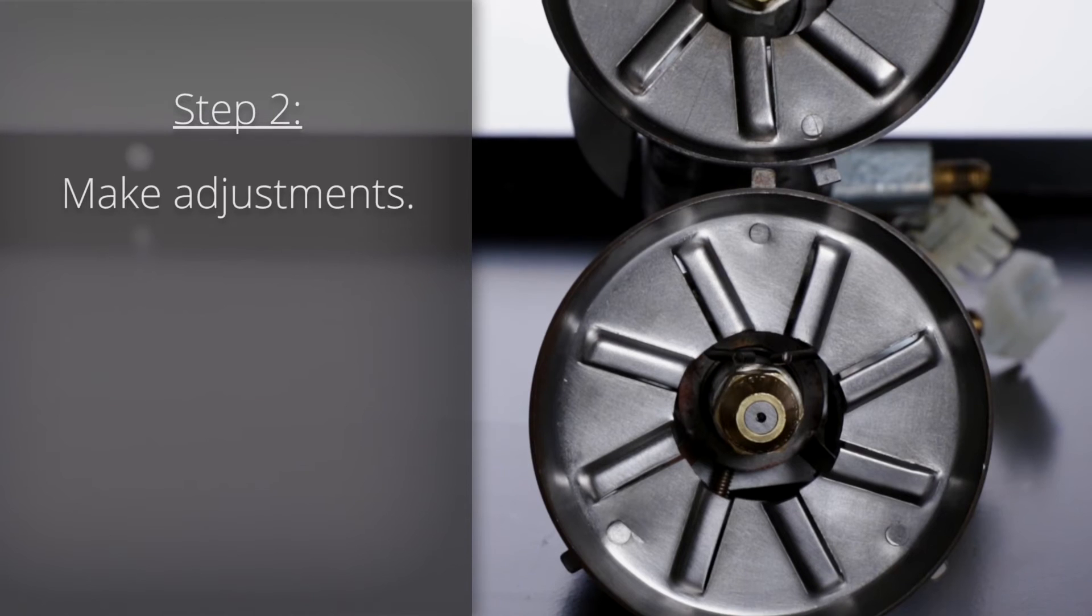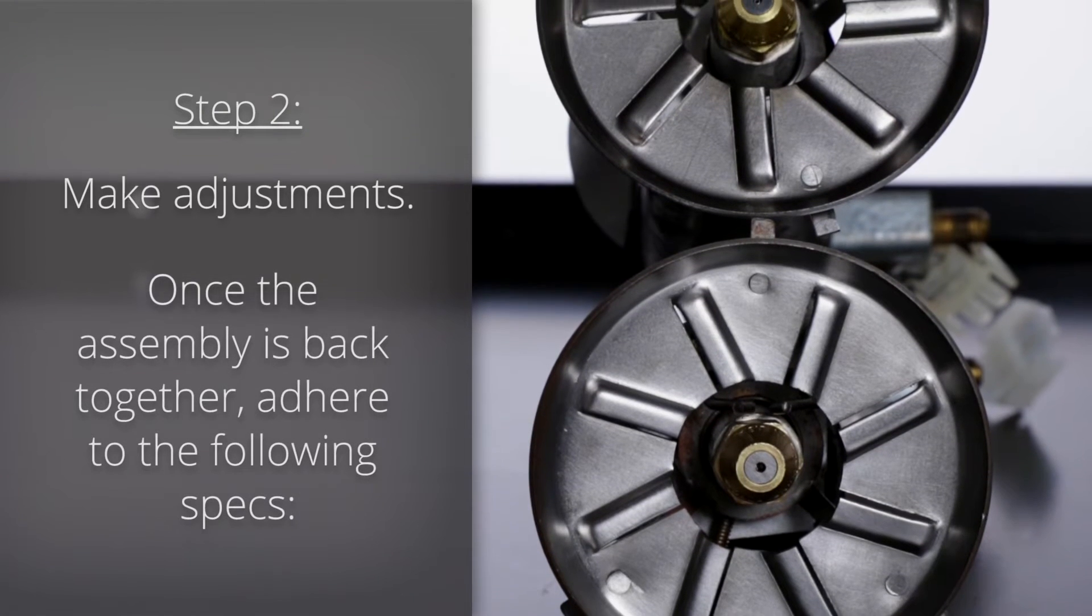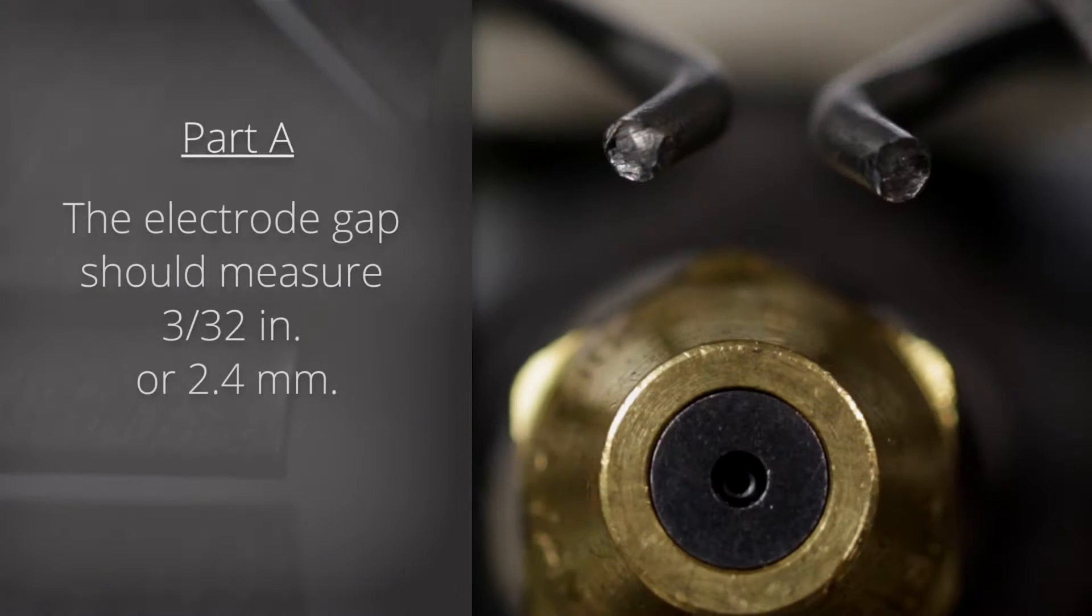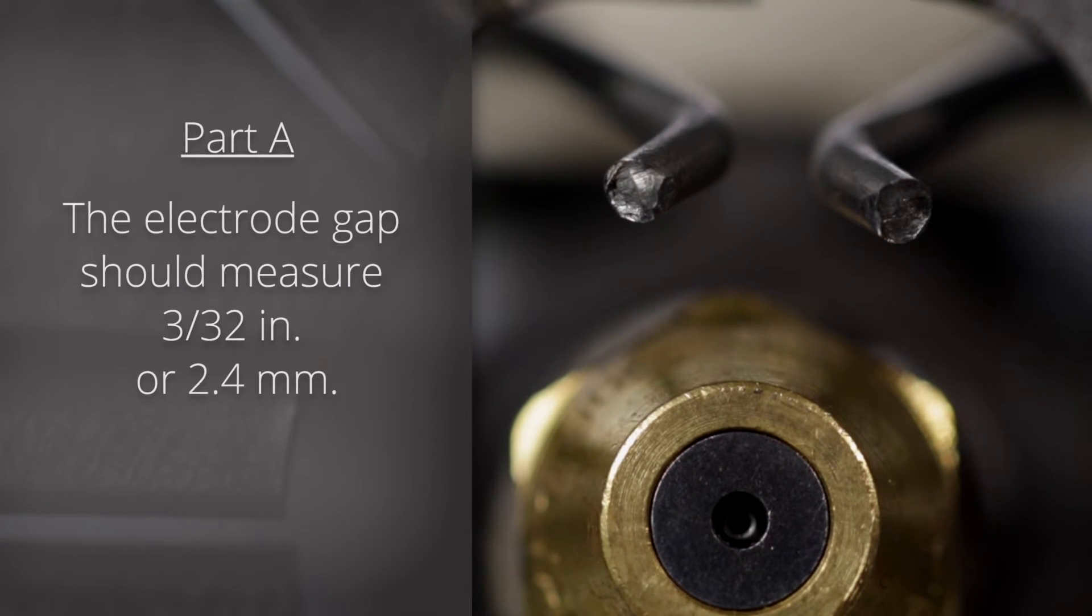Step 2: Make adjustments. Once the assembly is back together, adhere to the following specifications. Part A: The electrode gap should measure 3/32nds of an inch or 2.4 mm.